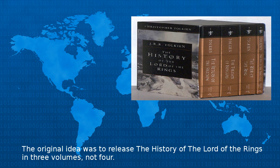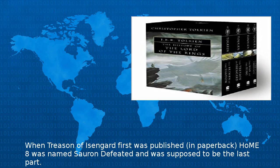The original idea was to release The History of the Lord of the Rings in three volumes, not four. When The Treason of Isengard was first published in paperback, HoME 8 was named Sauron Defeated and was supposed to be the last part.